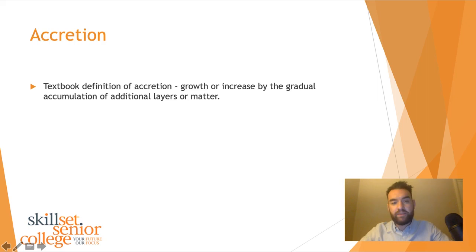What I'd like you to make a note of is this is the definition of accretion. The textbook definition of accretion is the growth or increase by the gradual accumulation of additional layers of matter. It's not a very quick process, it's a gradual process. It gains more momentum and gets bigger as a result of the accretion process.